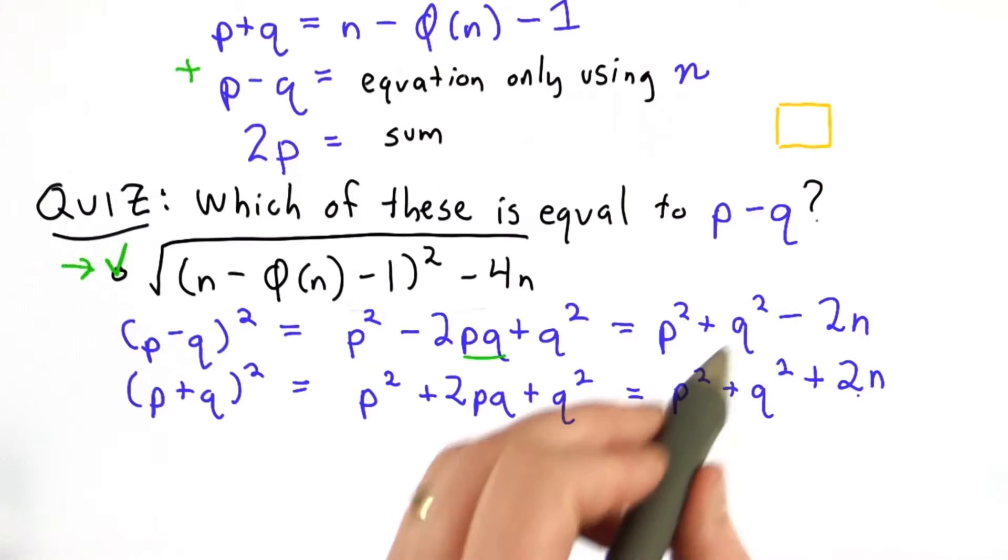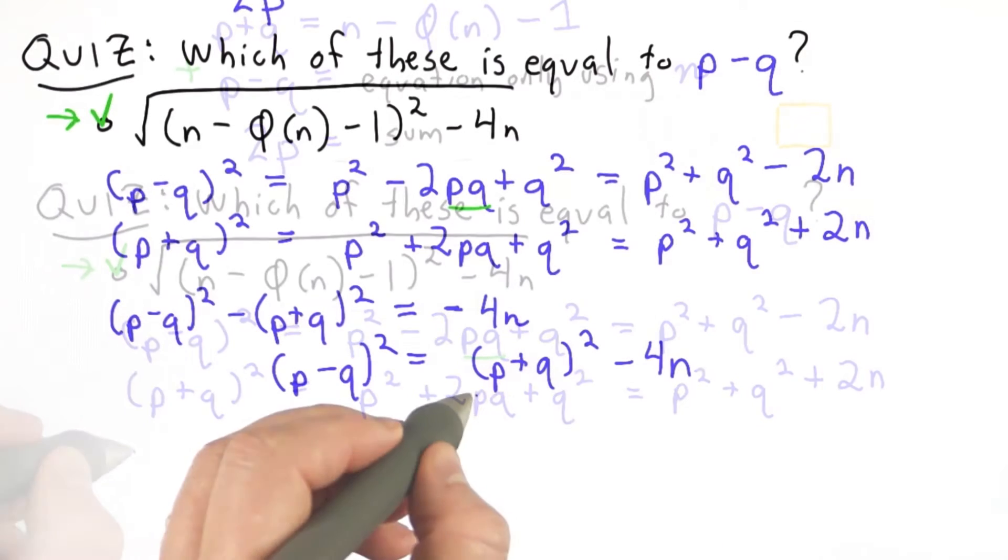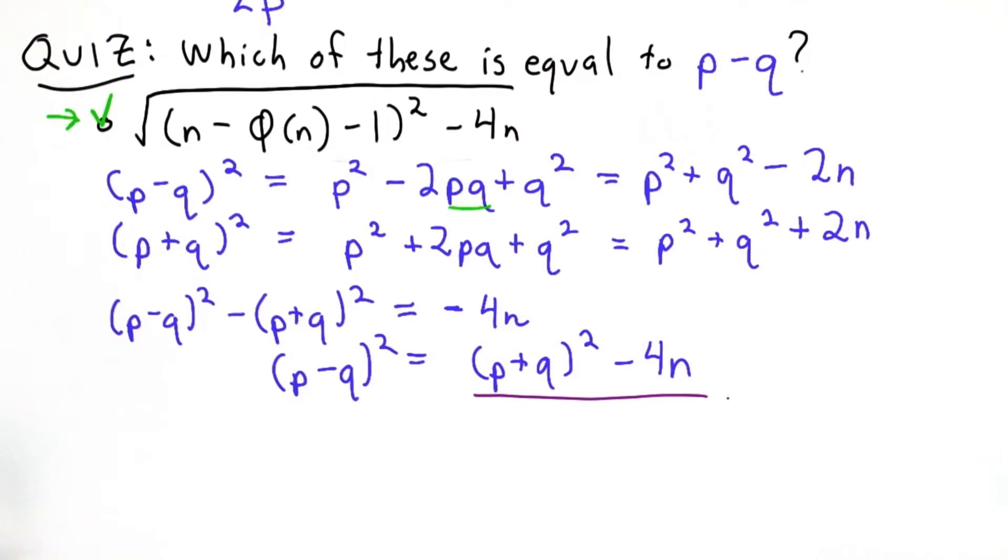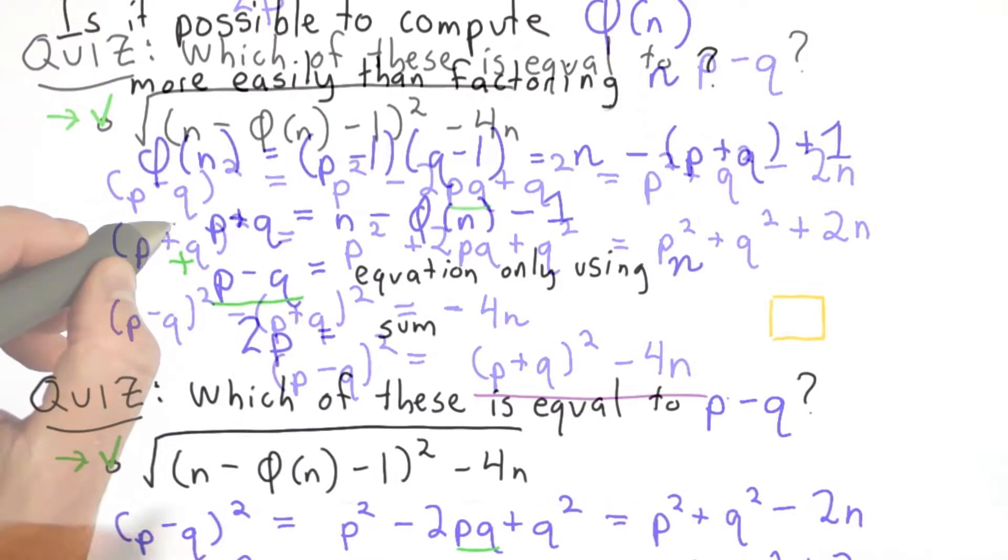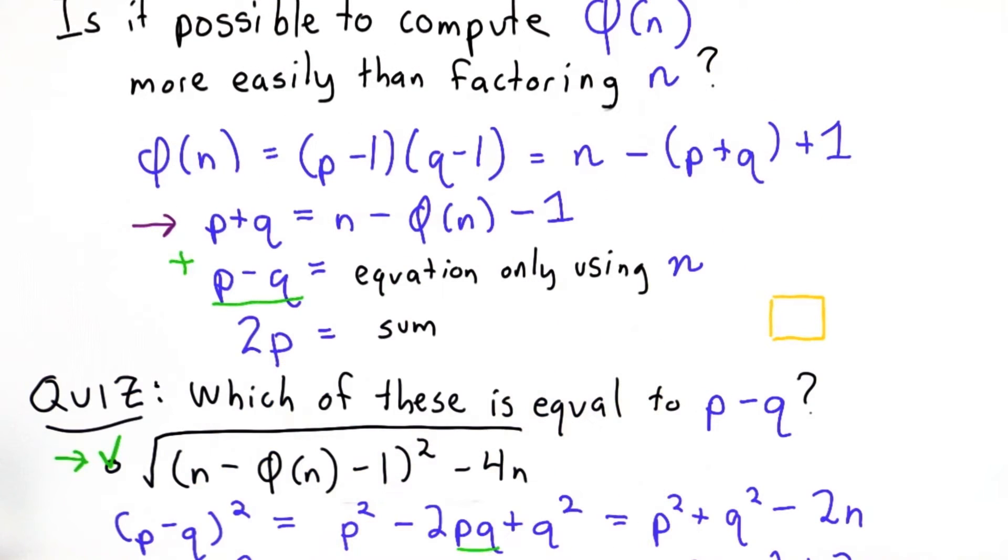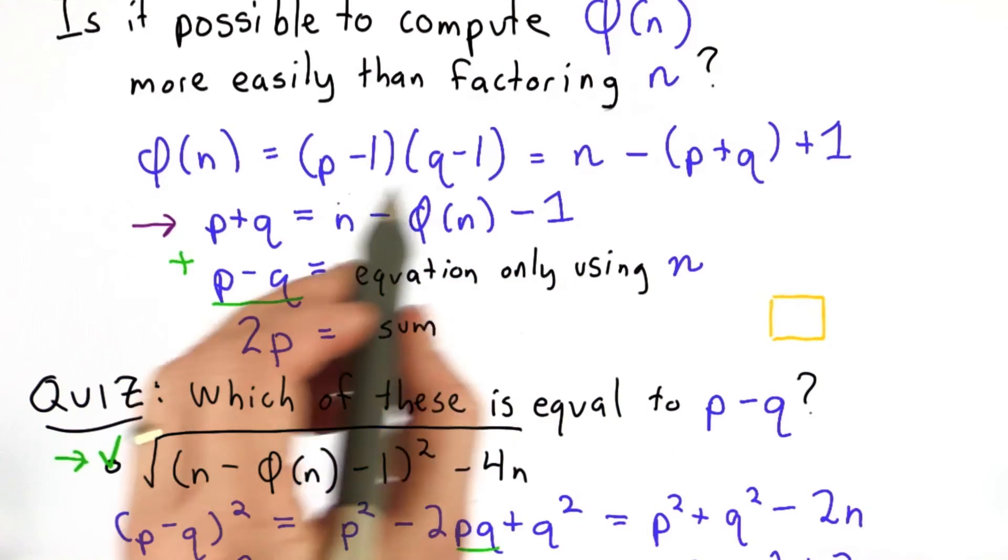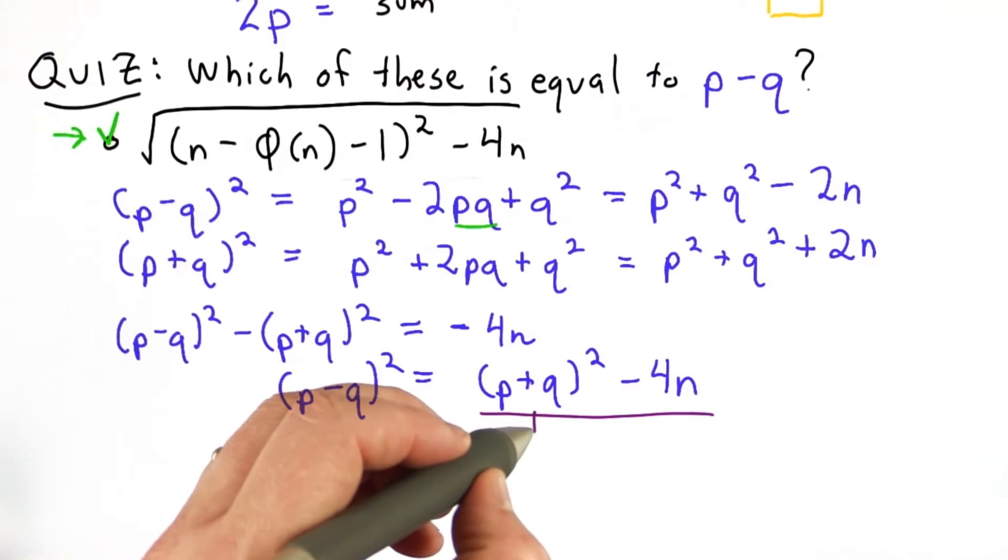So this looks good. If we subtract these two, we get rid of the p squareds and the q squareds. Now remember, our goal is to get an equation that doesn't involve p or q, but we have this property from the totient that we know what p plus q is in terms of just n. So we're going to substitute that in.